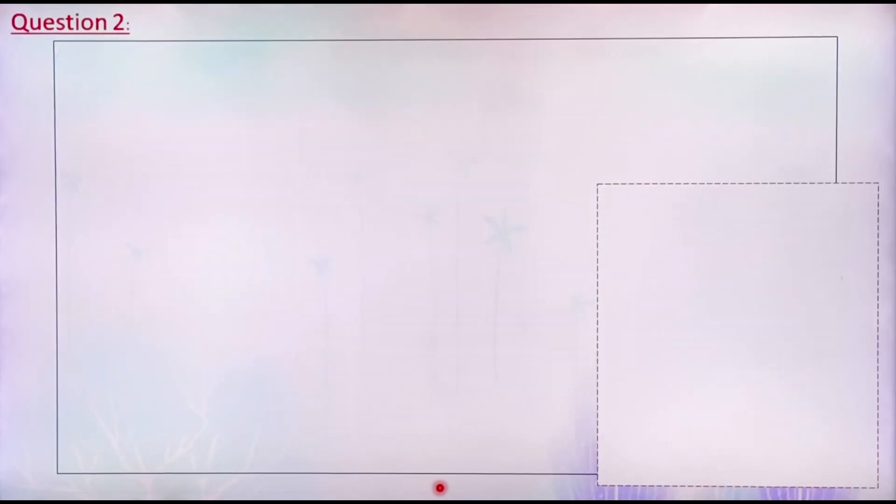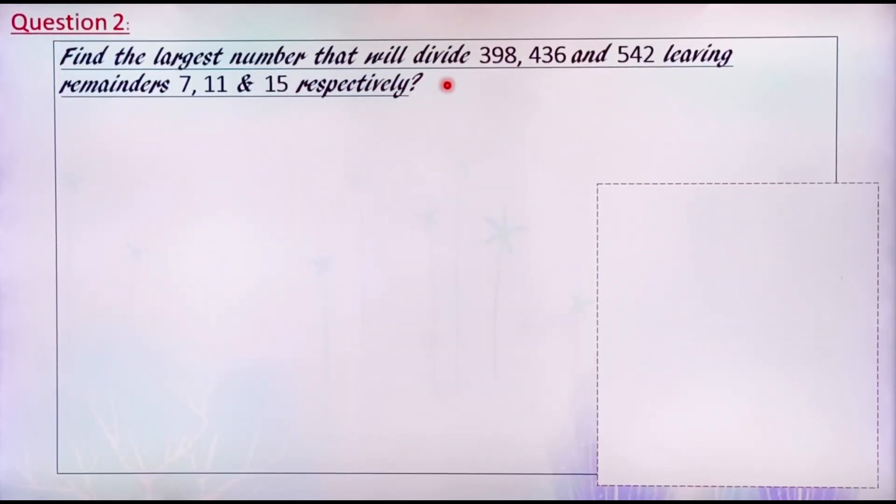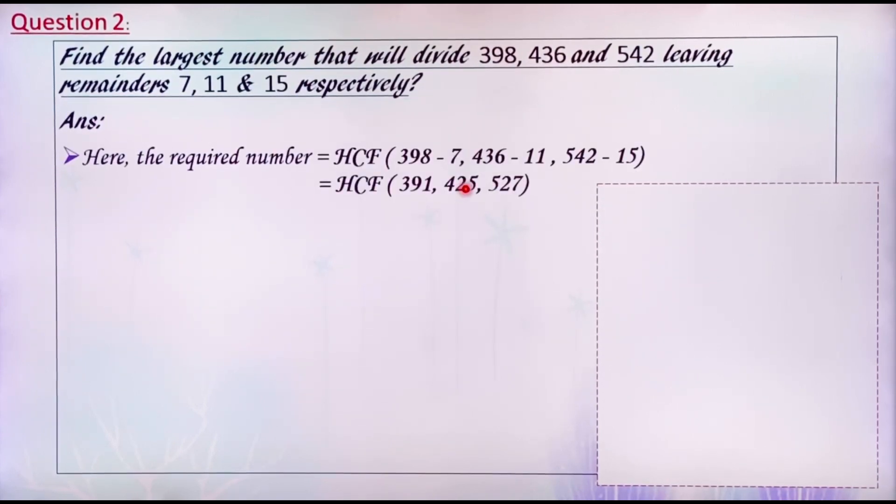Let's do the second question. Find the largest number that will divide 398, 436 and 542 leaving remainders 7, 11 and 15 respectively. See the question. Here, it is given that on dividing 398 by a number, there is a remainder of 7. That means 398 minus 7 is divisible by the required number. Similarly, 436 minus 11 and 542 minus 15 will be divisible by the required number. So, what you have to do here is find the HCF of 391, 425 and 527.